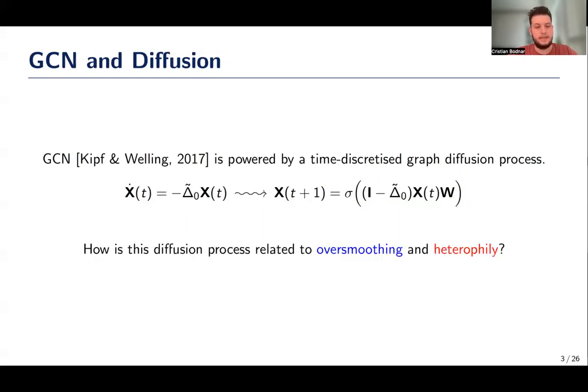Perhaps surprisingly, despite the introduction of a weight matrix and the non-linearity, GCN still retains some of the qualitative behavior of heat diffusion. Similarly to how temperatures become uniform during heat diffusion, it was observed that with more GCN layers, the features become increasingly smooth, a problem known today as oversmoothing. This problem can be particularly relevant if the graph is heterophilic, meaning that nodes in one class tend to connect to nodes in other classes. In this work, we argue that the trivial underlying geometry of the graph is to blame.